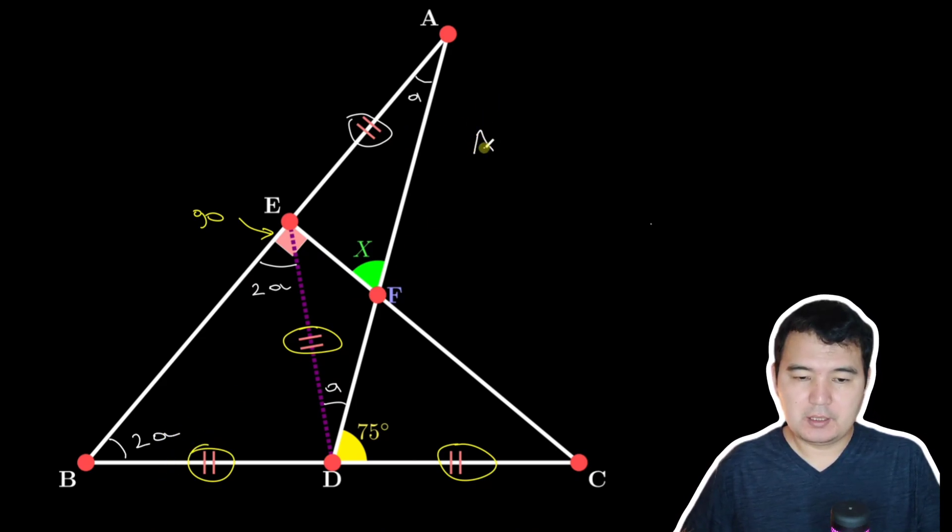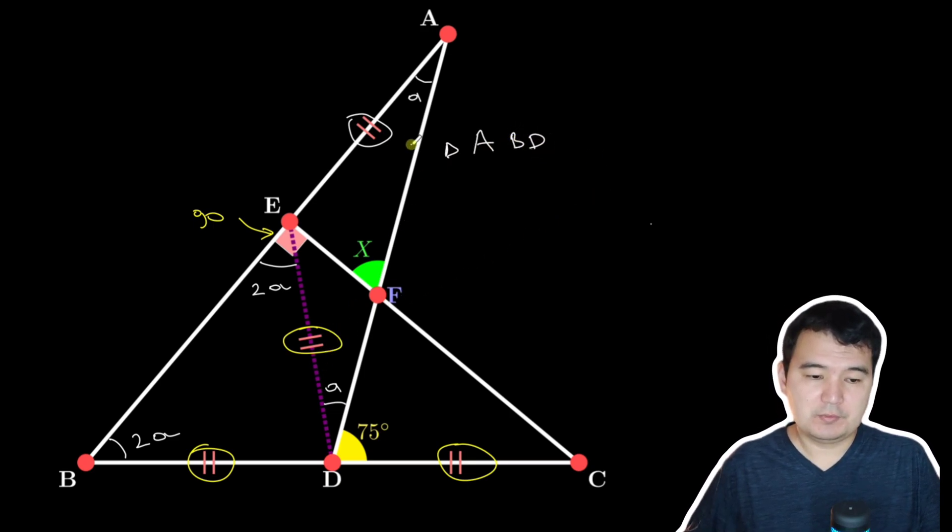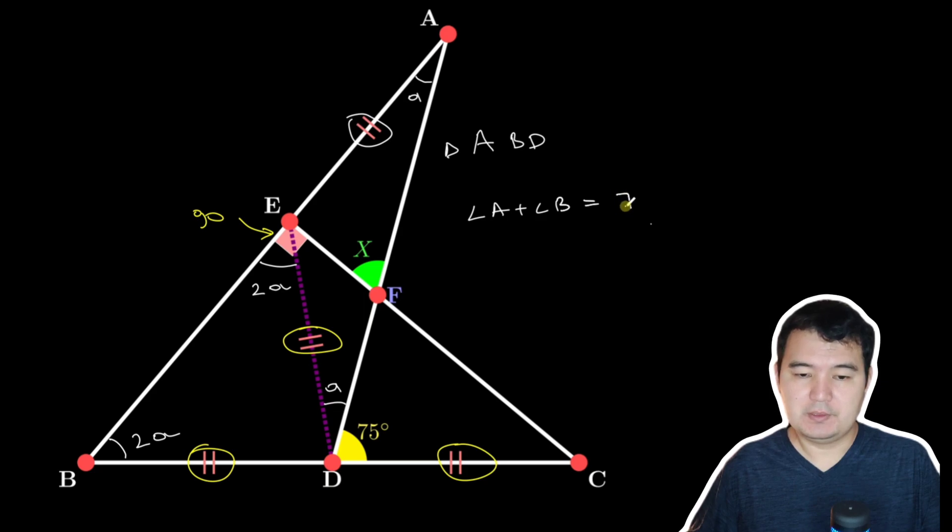Now look at triangle ABD. The sum of two angles, angle A plus angle B, equals the exterior angle of 75 degrees.